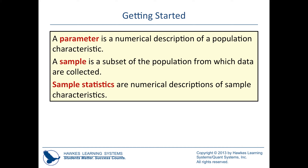Your population is the bigger, broader group of people, subjects, elements, cats, dogs — whatever we're studying. If we get a number from the population, it's called a parameter. If we collect information from a sample — which is just the subset of a larger population — that's called a statistic. Parameter goes with population; sample goes with statistic.